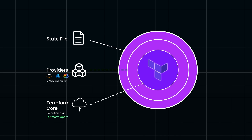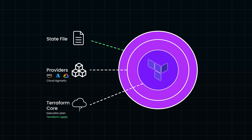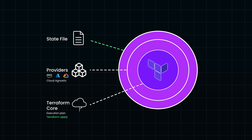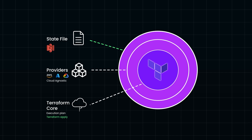The state file is where Terraform keeps track of all the resources it manages. Each time you make changes, Terraform references the state file to know what exists and what needs to be updated. For larger environments, it's recommended to store this file remotely using backends like AWS S3 or HashiCorp Consul.